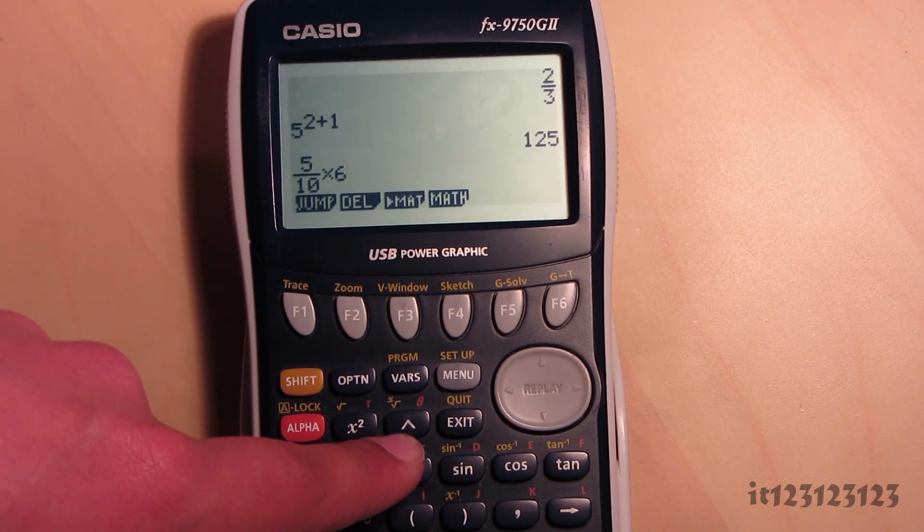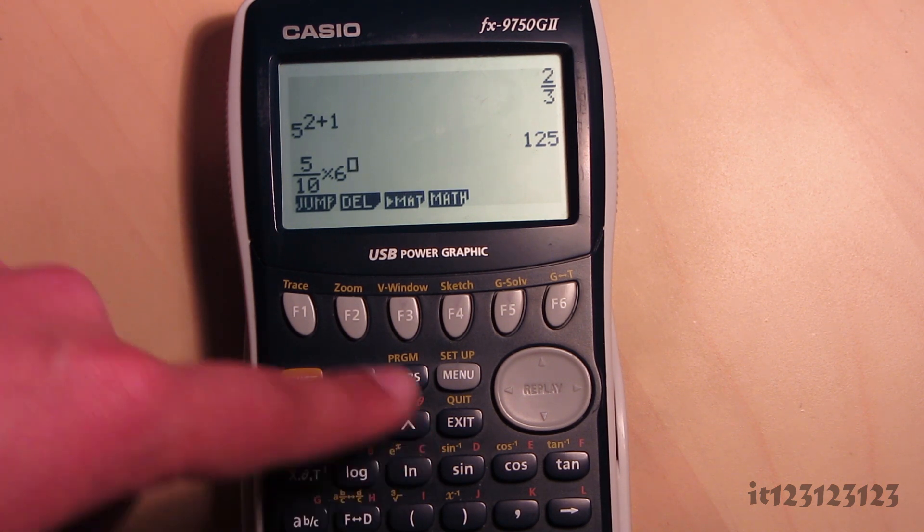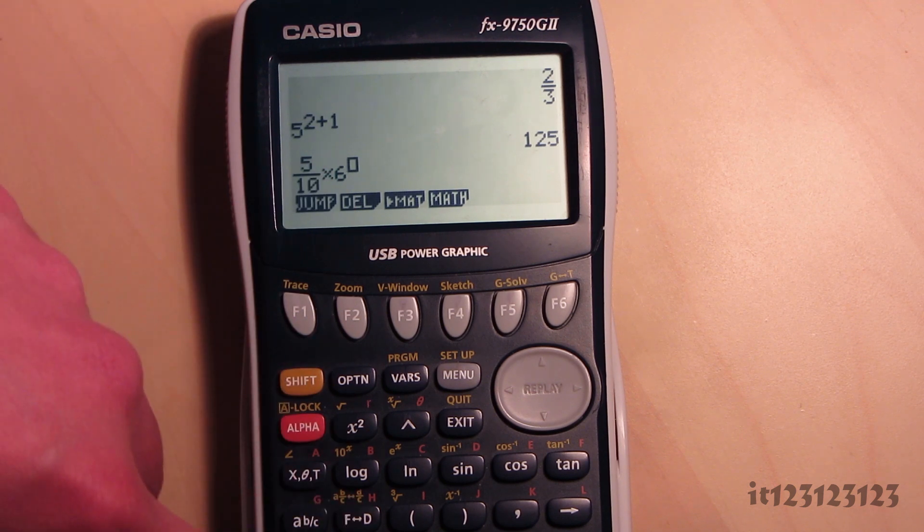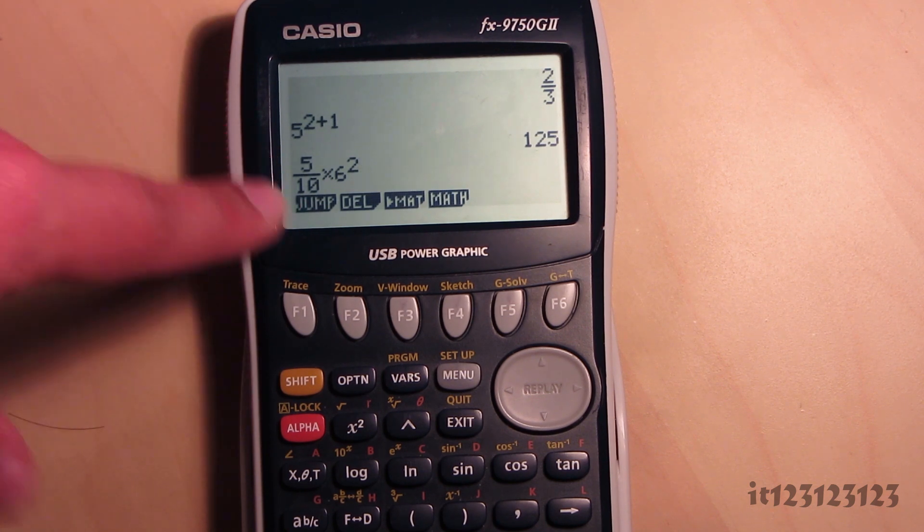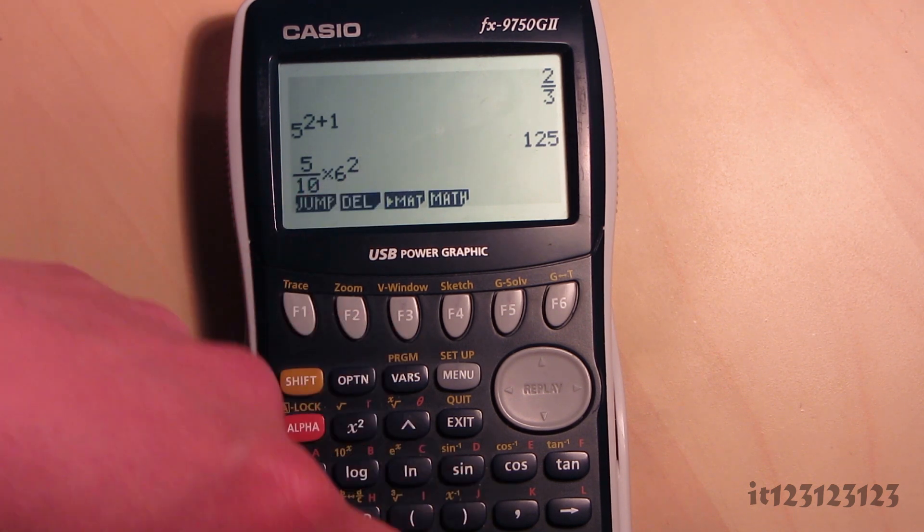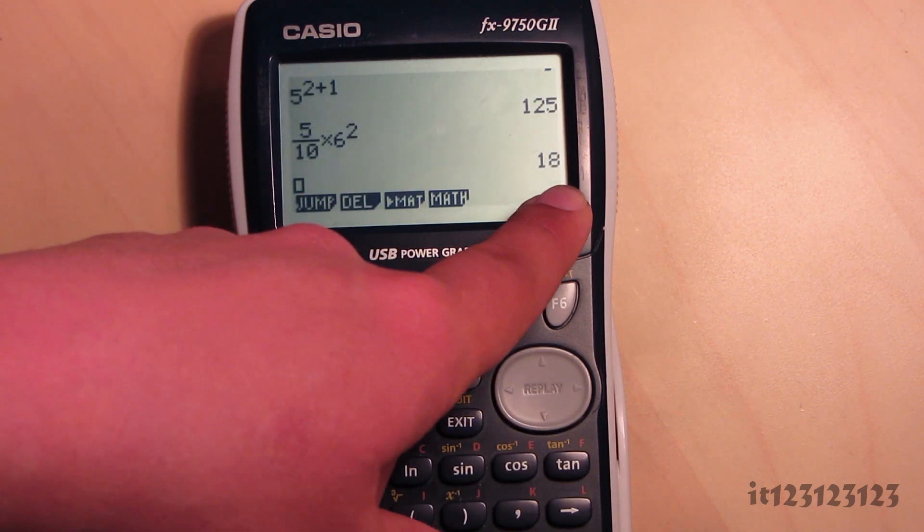So where previously it would put a small symbol to indicate to its power, now what it will do, it will bring it up to the top. So it looks much more like as if you were just writing maths on your own sheet of paper or in a textbook. So now you've got 5 tenths times 6 squared. And there we can see it like that.